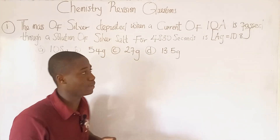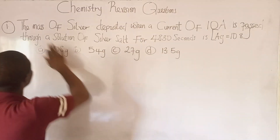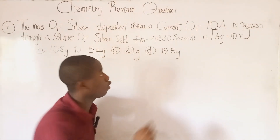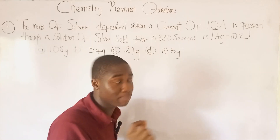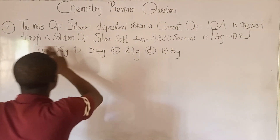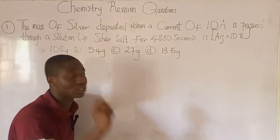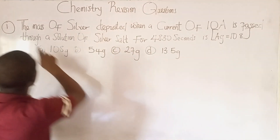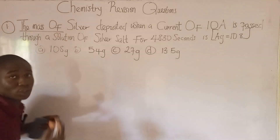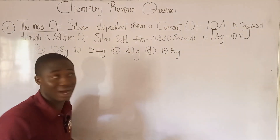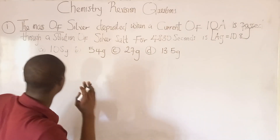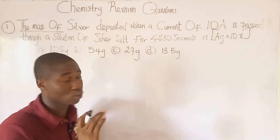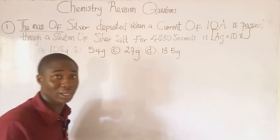The question says: calculate the mass of silver deposited when a current of 10 amperes is passed through a solution of silver salt for 4830 seconds. That is what the question is asking — it is asking us to get the mass.